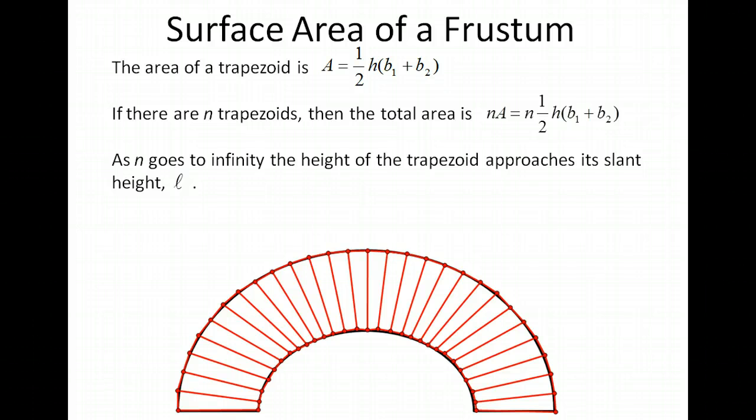We also saw that as n goes to infinity, the height of the trapezoid approaches the slant height of the frustum. So in our formula we're going to replace height with slant height L. Then we multiply the n inside of the parenthesis.